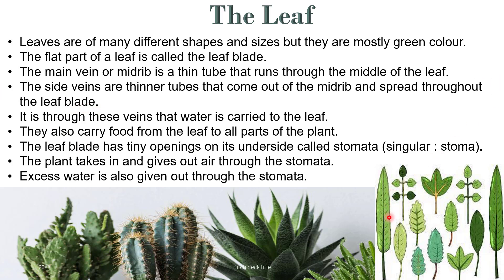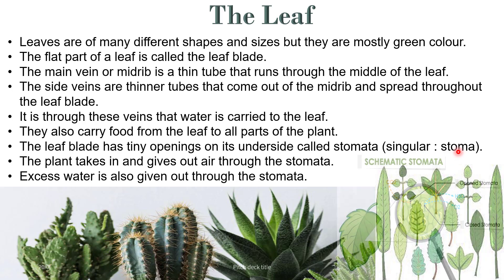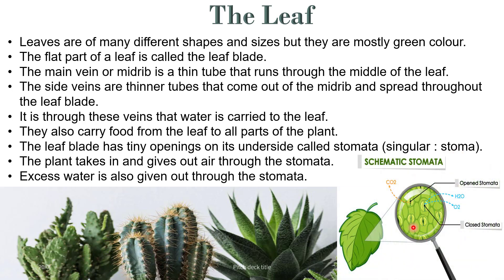It is through these veins that water is carried to the leaf. They also carry food from the leaf to all parts of the plant. The leaf blade has thin openings on its underside called stomata — singular: stoma. The plant takes in and gives out air through the stomata. Excess water is also given out through the stomata.